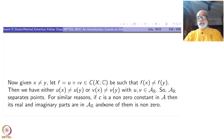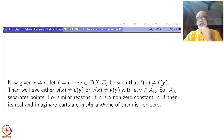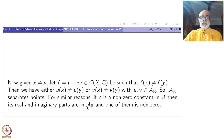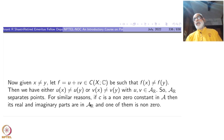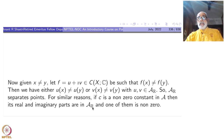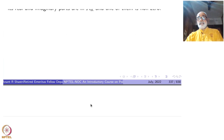A separates points implies A_r also separates points, thanks to closed-under-conjugation — without that you could not have concluded this. For similar reasons, if c is a non-zero constant inside A, either its real part or imaginary part must be non-zero, so A_r also contains a non-zero real constant. All the hypotheses are satisfied by A_r.